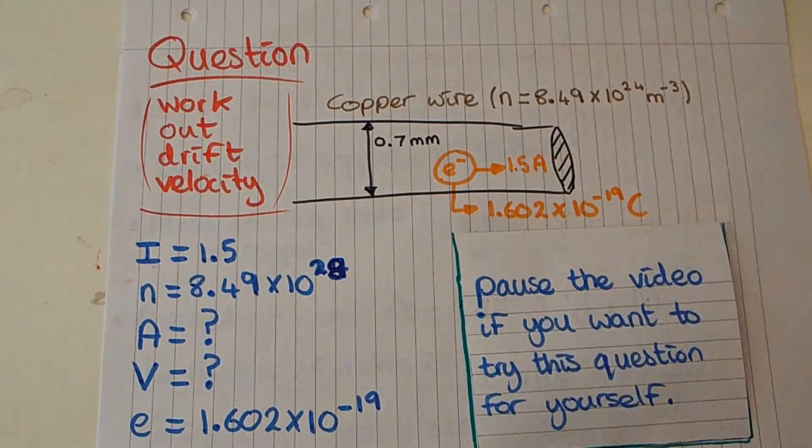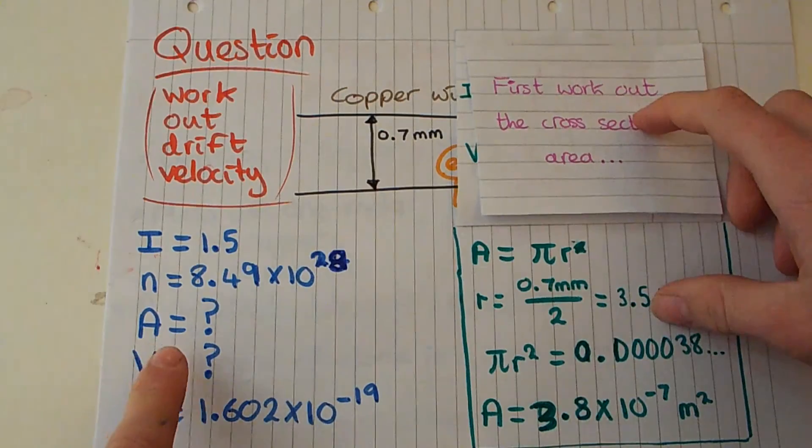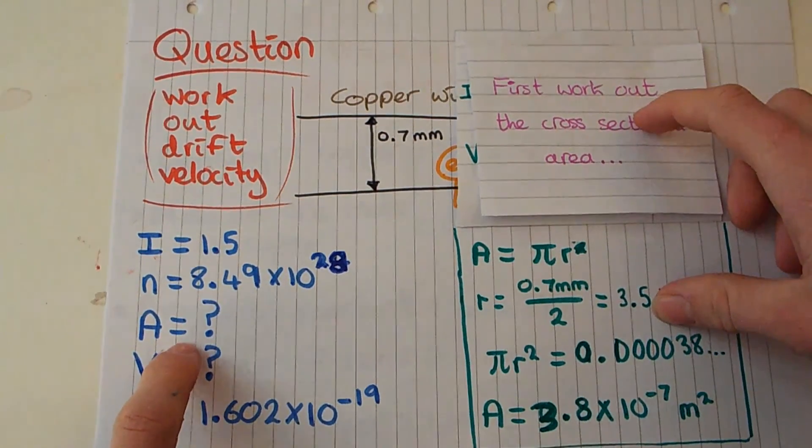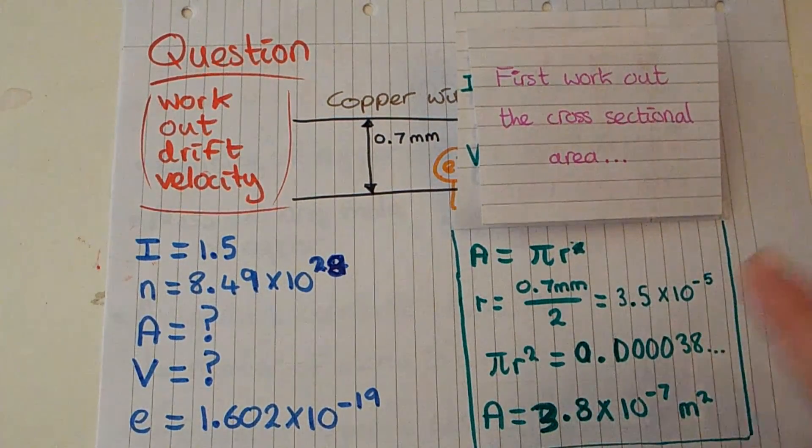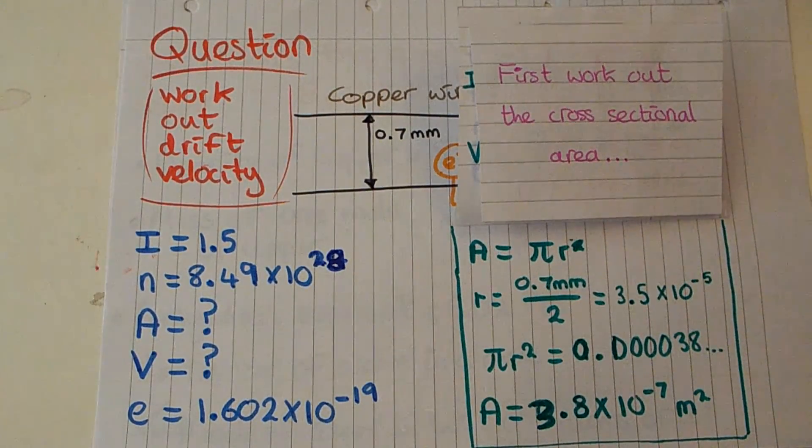If you think you can work this out go ahead, otherwise pause the video. I'm now going to show you the answer. First of all we need to work out the cross sectional area because we don't have that information yet. We are told that we have a diameter of 0.7 millimeters, so we can work out the cross sectional area using the area of a circle because we're going to assume that this wire is a cylinder.